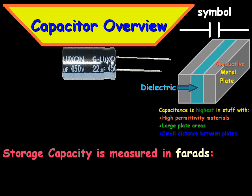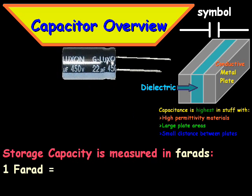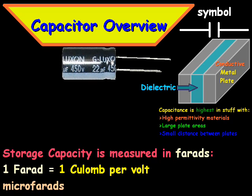Storage capacity is measured in a unit called farads. Looking at this capacitor in front of us, it shows UF — microfarads — on it. One farad is equal to one coulomb per volt, and typically one farad takes up a lot of space, so smaller capacitors like this one are measured in microfarads, which is one millionth of a farad.